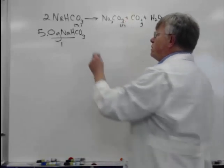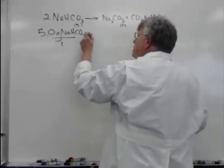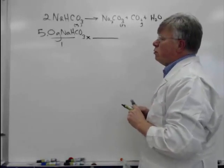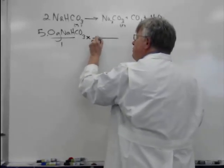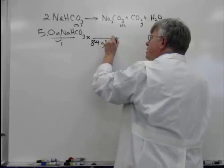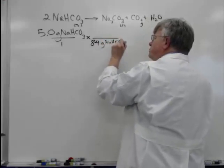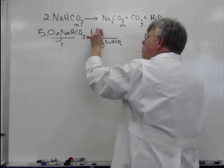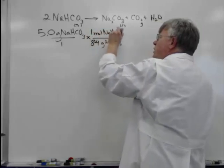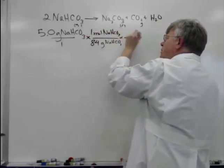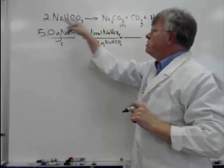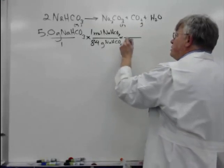The first step is to convert to moles — you almost always have to convert things to moles. So 84 grams of sodium hydrogen carbonate equals one mole of sodium hydrogen carbonate. Next, I have to deal with the mole ratio, which is two moles of sodium hydrogen carbonate to one mole of CO₂.